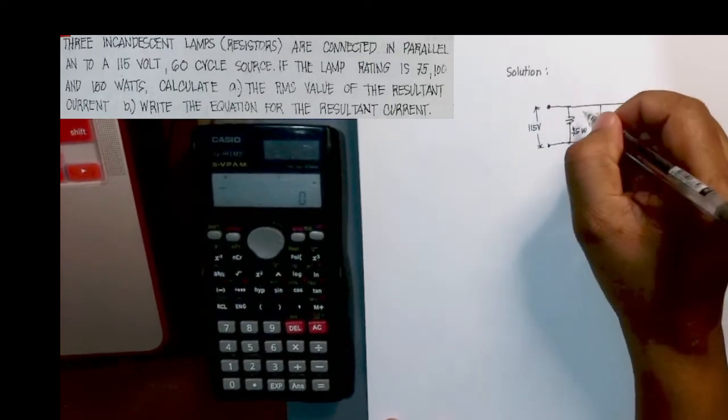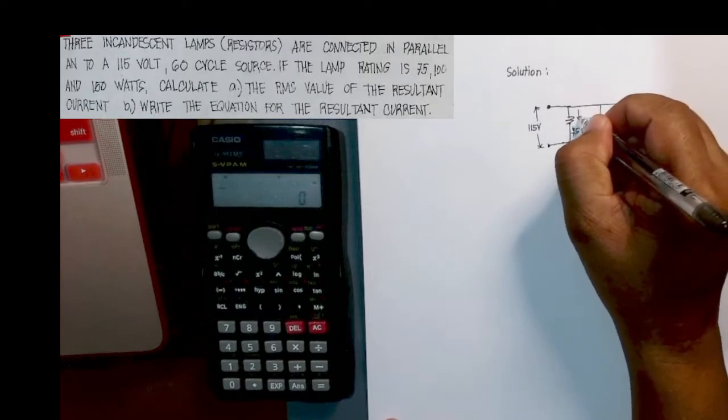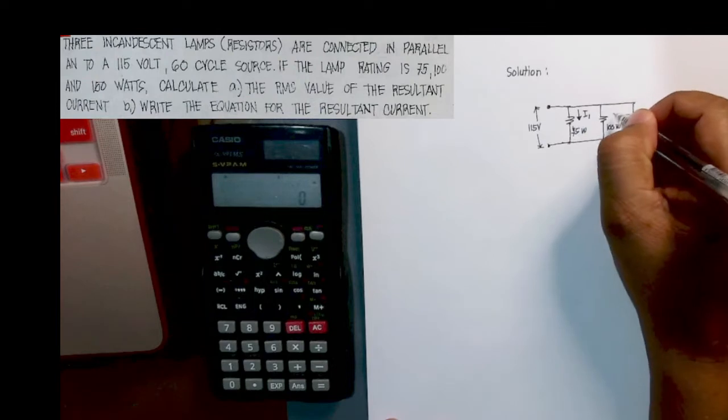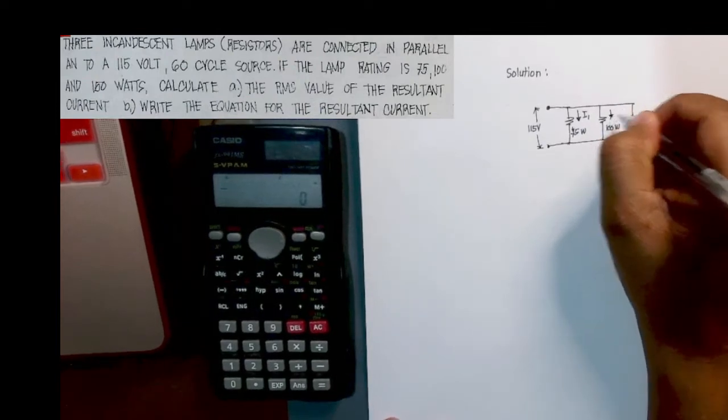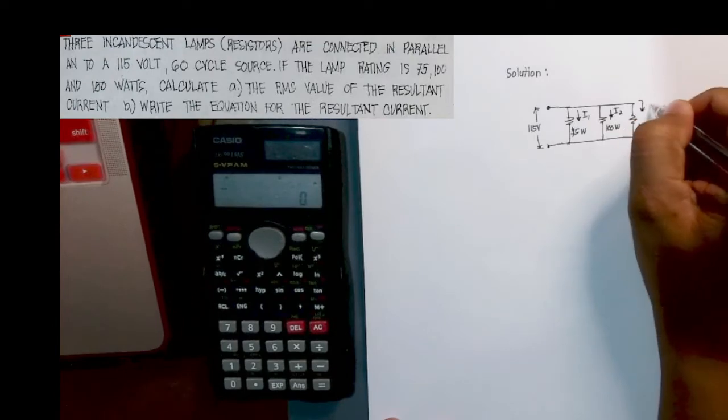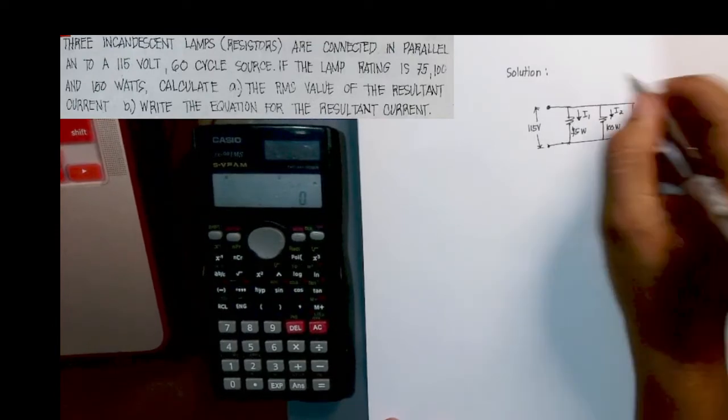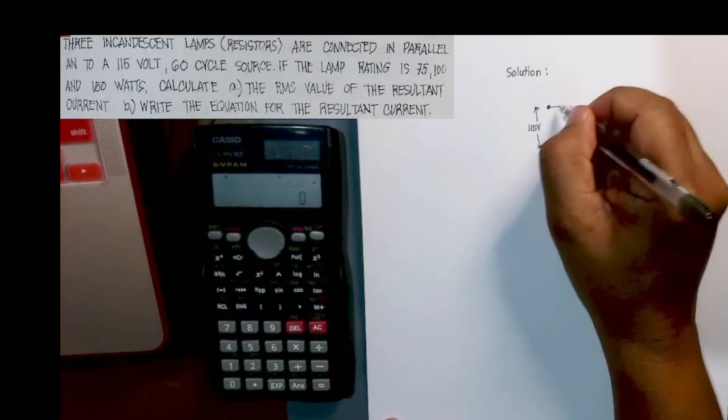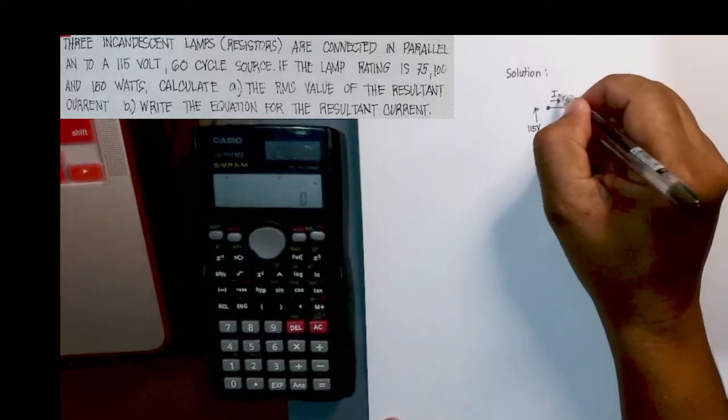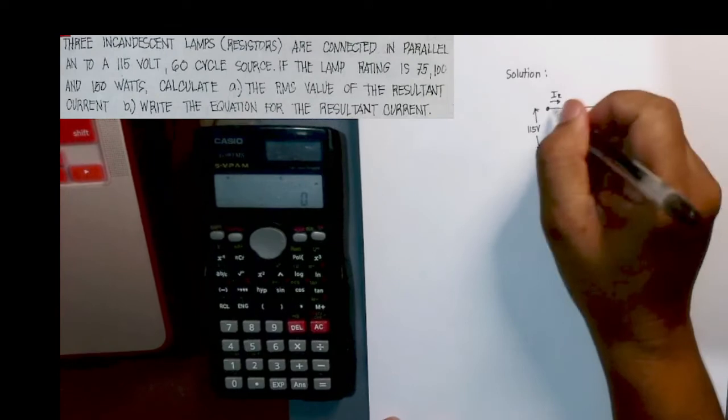115 volts. You can have a value for the current. For 75 watts I name this i sub 1, for 100 watts i sub 2, and for 150 watts is i sub 3. And the total current, or what we call the resultant current, is here.